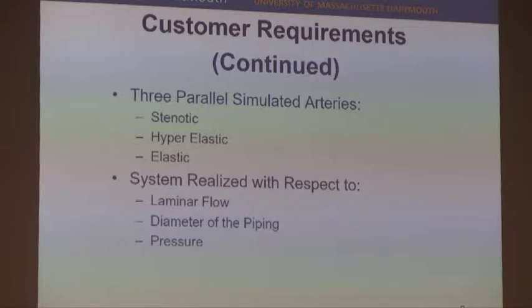Our customer requirements continue. In the cardiovascular system, there are different kinds of arterial structures. We worked with the hyper-elastic and elastic types, which we'll explain further later. The system also realizes laminar flow in the cardiovascular system, along with the diameter of the pipe being relative to those arterial structures and the pressure found in that system.